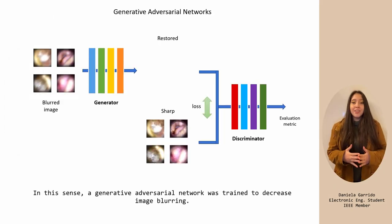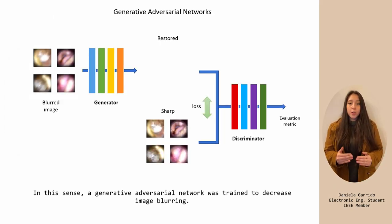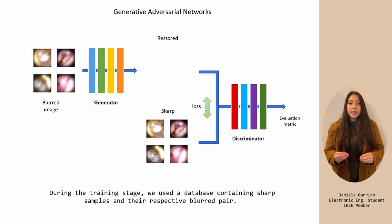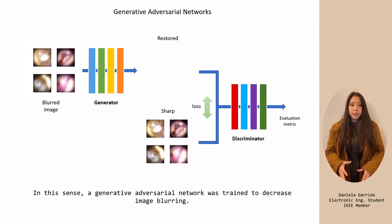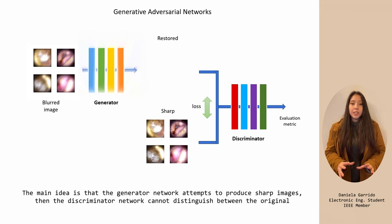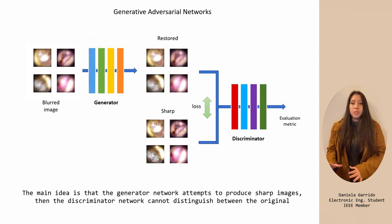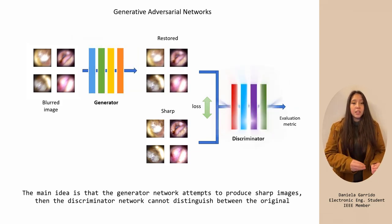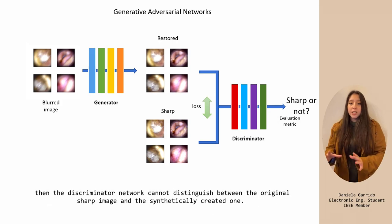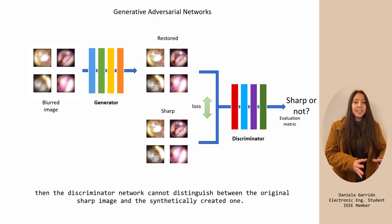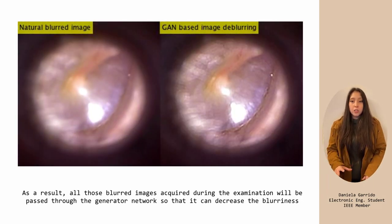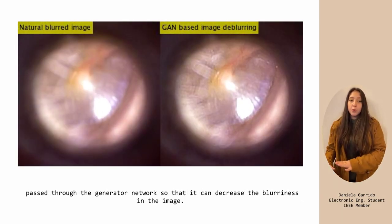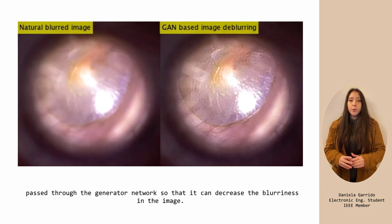In this sense, a generative adversarial network was trained to decrease image blurring. During the training stage, we used a database containing sharp samples and their respective blurred pairs. The main idea is that the generator network attempts to produce sharp images such that the discriminator network cannot distinguish between the original sharp image and the synthetically created one. As a result, all blurred images acquired during the examination will be passed through the generator network to decrease the blurriness.